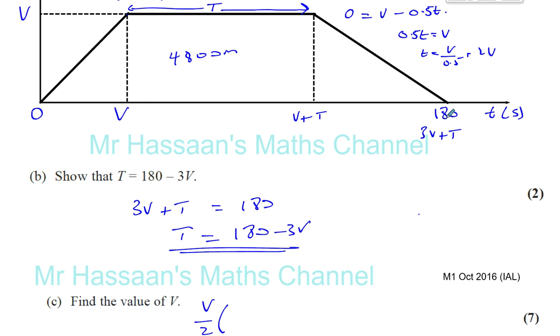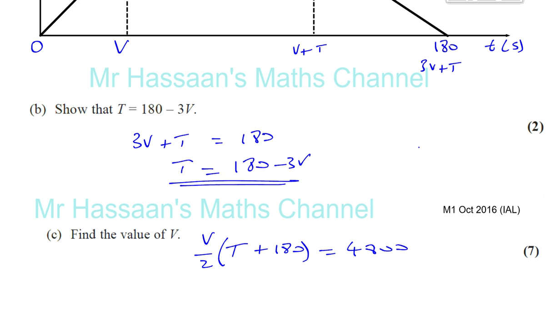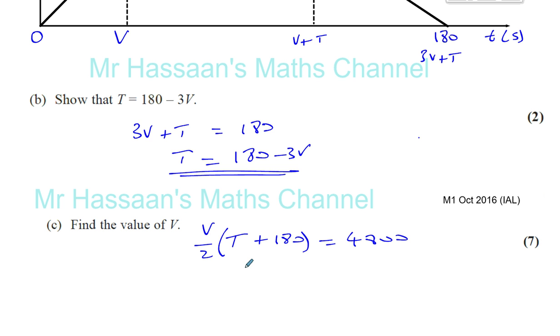It's half the distance between the parallel sides times the sum of the parallel sides. Well, the distance between here and here is T because that's, it went T seconds constant speed. And the distance between there and there is 180. So we've got the sum of the parallel sides is T plus 180. And we know that the area is equal to 4,800. So we can use this to find the value of V.